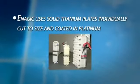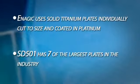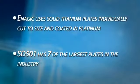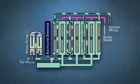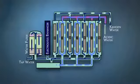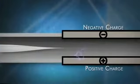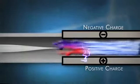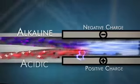One of the most important things to understand about water ionizers are the plates. Enagic uses solid titanium plates individually cut to size and then coated in platinum. The SD501 has seven of the largest plates in the industry. The plates are important because they are charged with electricity, becoming the engine of the ionizer. When water passes over the plates, the minerals in the water are separated into two streams, one alkaline and one acidic. The more plate surface area and power you can apply to the plates, the better the separation and quality of the ionized water.